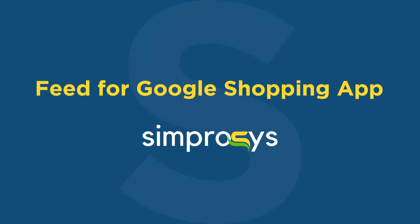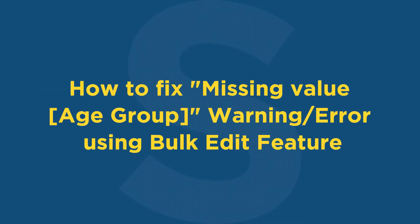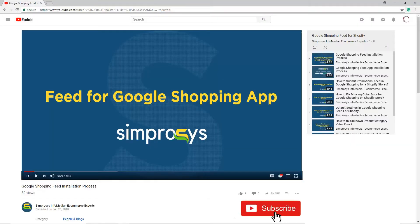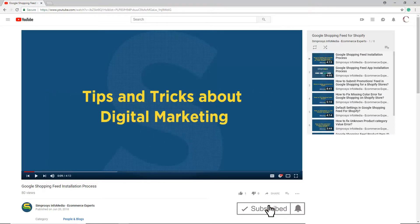Hello friends, welcome to the help videos of Feed for Google Shopping app by Simprosys. In this video, we are going to see how to fix the missing value age group warning or error from Google Merchant Center using the bulk edit feature. Before moving to the video, please subscribe to our channel to get tips and tricks about digital marketing, and press the bell icon to get notified instantly once we upload any new video.